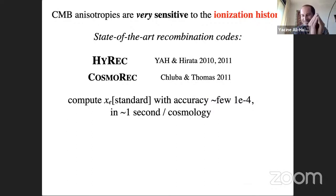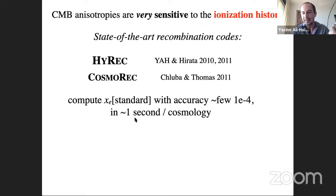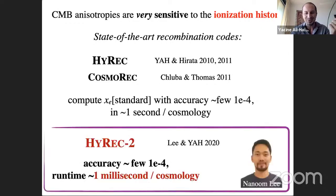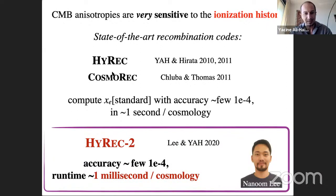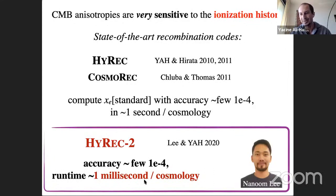Standard recombination was something I worked on with Chris Hirata during my thesis, producing the code HyRec; Jens Chluba also wrote CosmoRec. These codes are accurate to 10⁻⁴ and take about a second per cosmology. Last year my student Nanoom Lee and I produced HyRec-2, which uses correction functions from HyRec for radiative transfer effects. It achieves the same accuracy over the full Planck 3-sigma cosmology range with less than 10⁻⁴ errors and runs in one millisecond.